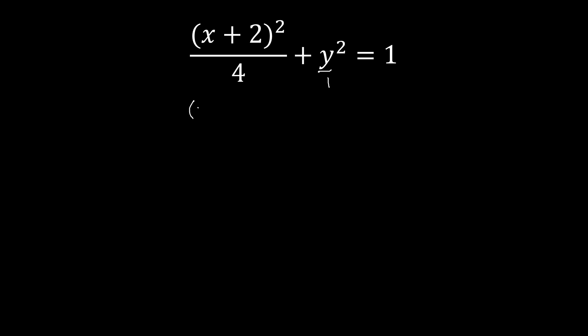Starting with x plus 2 squared over 4, we multiply that by 4. Then we have plus y squared and we multiply that by 4 as well. That will equal 1, and again we multiply that by 4. Next, we cancel — we will only have non-fraction terms because we're multiplying by the denominator.